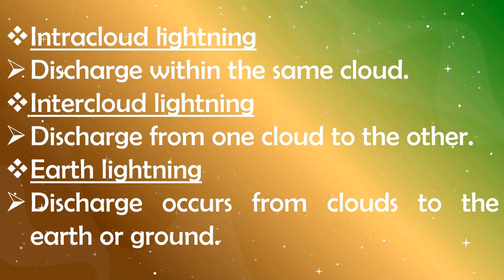Let's see the types of lightning. Depending on the sides between which the charges jump, there are three main types of lightning. They are cloud-to-cloud lightning or intracloud lightning, cloud-to-air lightning, and cloud-to-ground lightning, also called earth lightning.